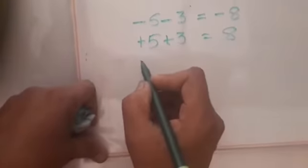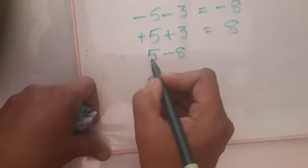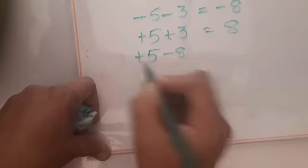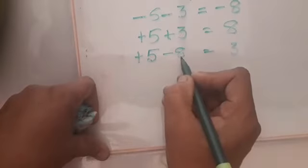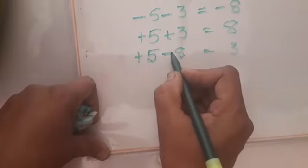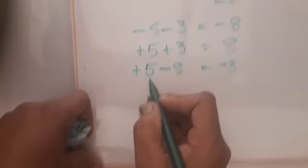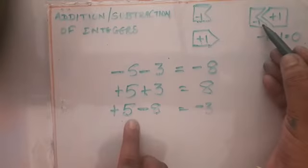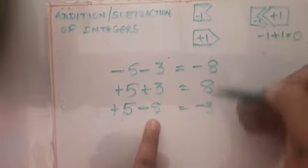When opposite signs are given, say 5 and minus 8 — here no sign is given for 5, so consider it as plus 5. When opposite signs are given, subtract the integers: 8 minus 5 is 3. The bigger number 8 has a negative sign, so the answer is negative, giving minus 3.